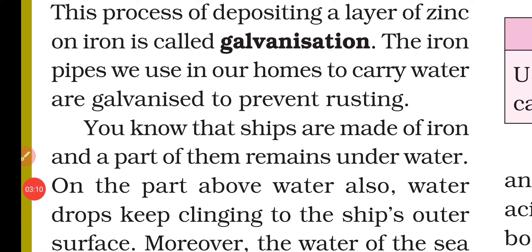The process of depositing a layer of zinc on iron to prevent rusting is known as galvanization. The iron pipes that we use at home are also galvanized to prevent them from rusting.